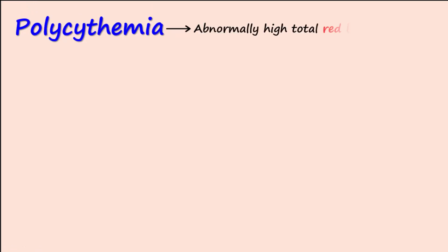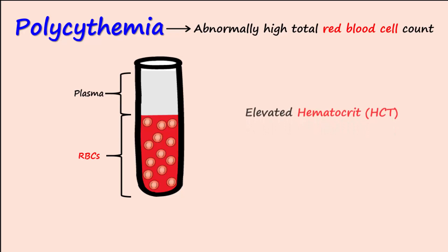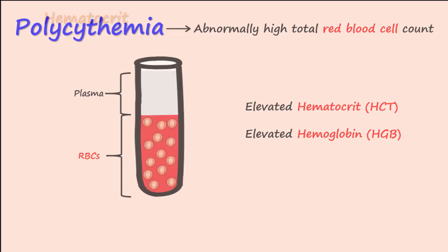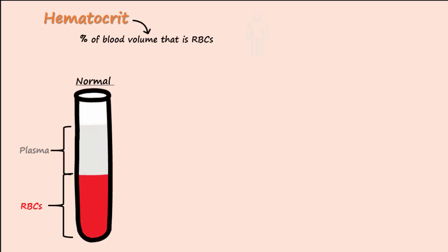Polycythemia is characterized by an abnormally high total red blood cell count relative to plasma, and hematocrit and hemoglobin levels are usually elevated. Hematocrit is the percentage of blood volume that has red cells, and its normal range for men is 45% to 52% and 37% to 48% for women.